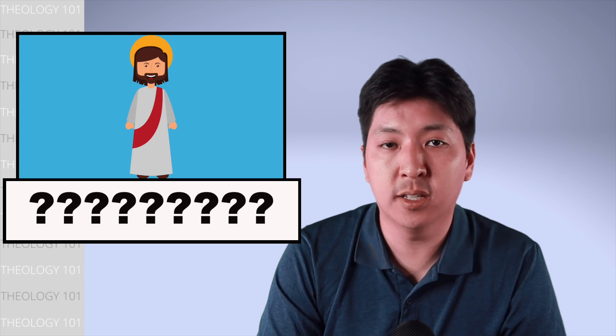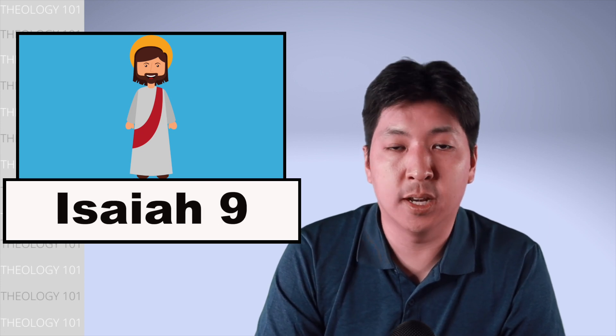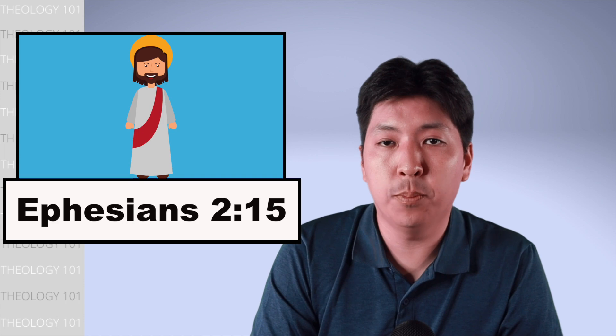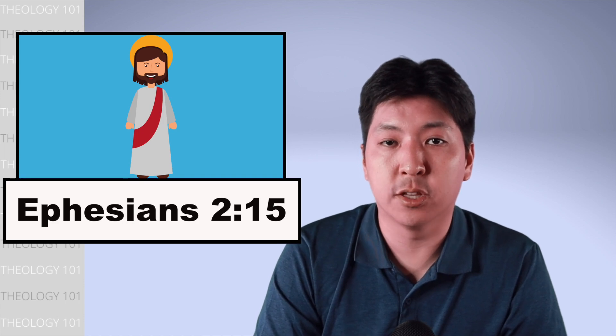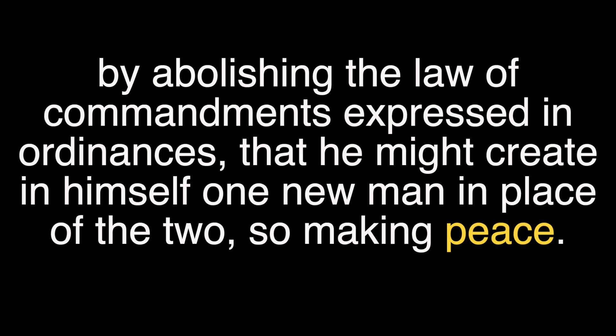Remember who the ultimate son of God is? Jesus is called the Prince of Peace in Isaiah chapter 9. Jesus is the one who made peace between us and God through his death on the cross. By abolishing the law of commandments expressed in ordinances, that he might create in himself one new man in place of the two, so making peace.